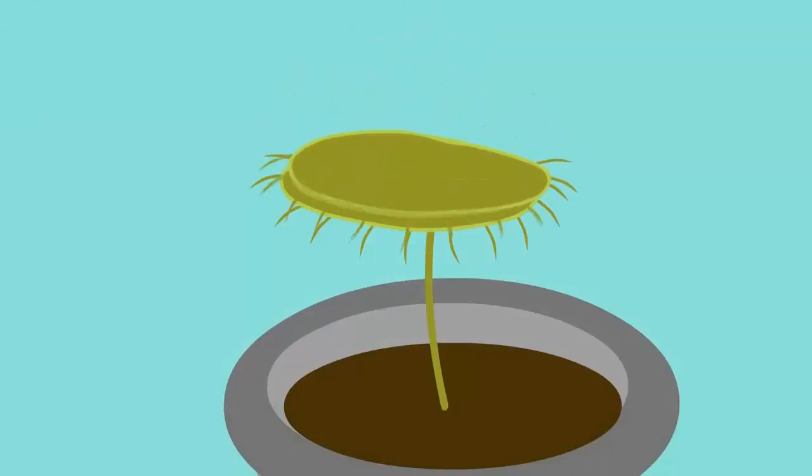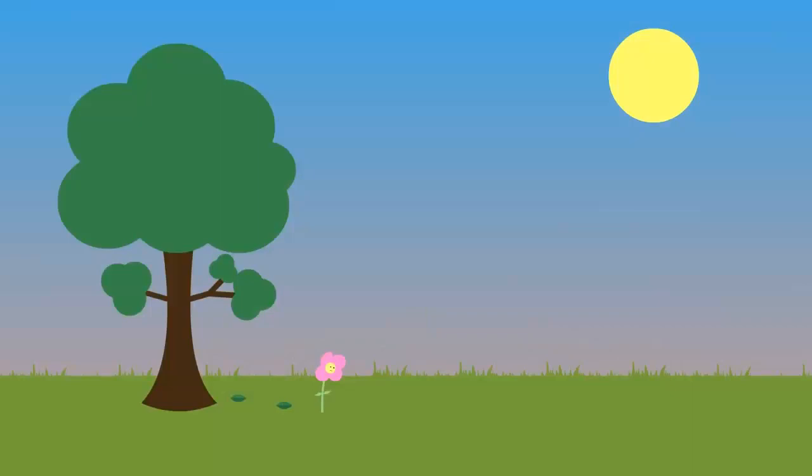Green plants are called producers or autotrophs because they have the ability to produce their own food. They are the start of the food chain and every animal relies upon them either directly if they are a herbivore like a rabbit or indirectly if they are a carnivore like a fox.